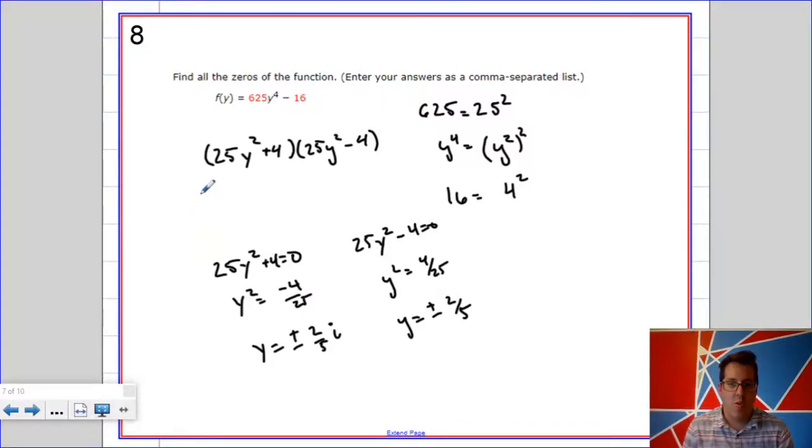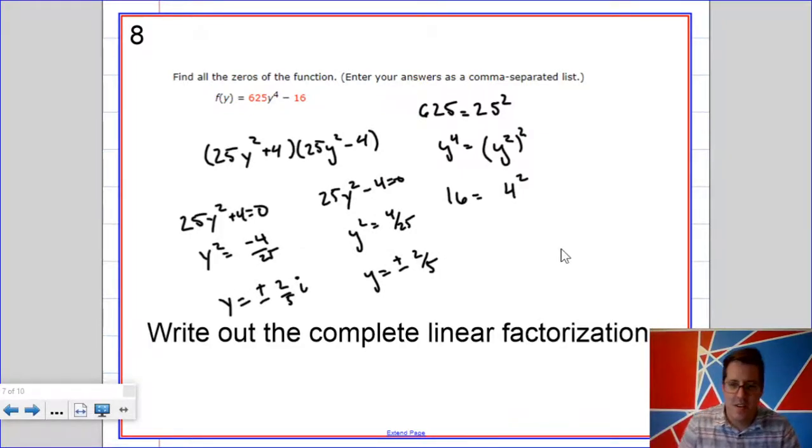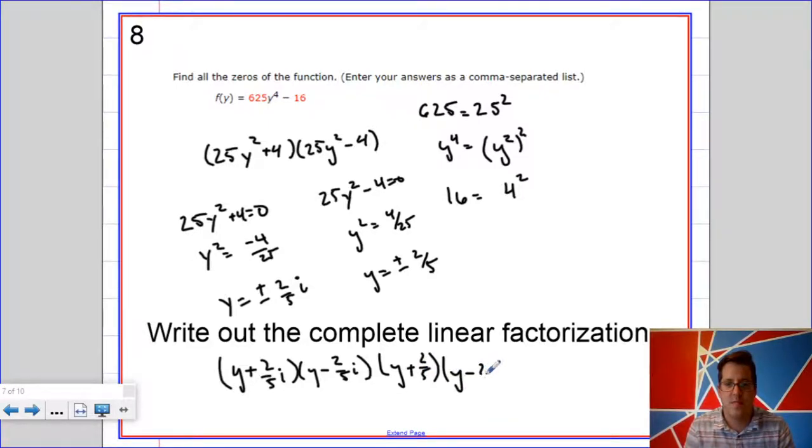Now, this approach has one slight drawback, and that's the second part of the problem asks you to write out the complete linear factorization. Now, one thing for starters, notice that this entire problem is in y, not in x. So I'm seeing a lot of people writing out y plus 2/5ths i, times y minus 2/5ths i, times y plus 2/5ths, times y minus 2/5ths. Now, the problem with this is that my lead coefficient is 625, and that is not what my lead coefficient would be here.